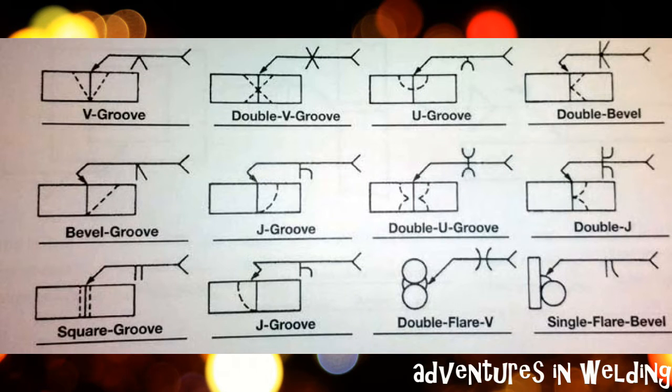Alright, you got your answers. We got our V-groove on the arrow side, the double V-groove on the arrow and other side, U-groove again on the arrow side, the double bevel on arrow and other side, bevel-groove on arrow side, J-groove on arrow side, the double U-groove on both sides, double J-groove on both sides, square groove on the arrow side only, J-groove on the arrow side, the double flare-V on both sides, and the single flare bevel on the arrow side only. Alright, now we're all warmed up, let's go on to the next group.